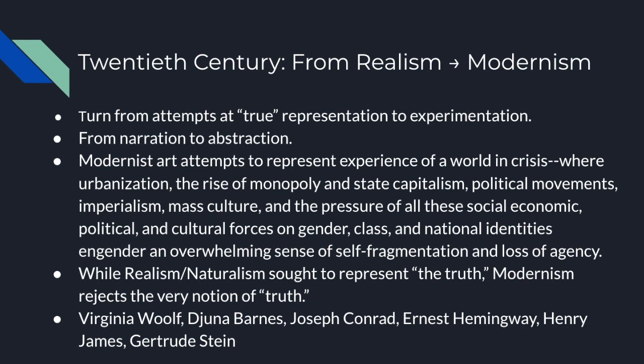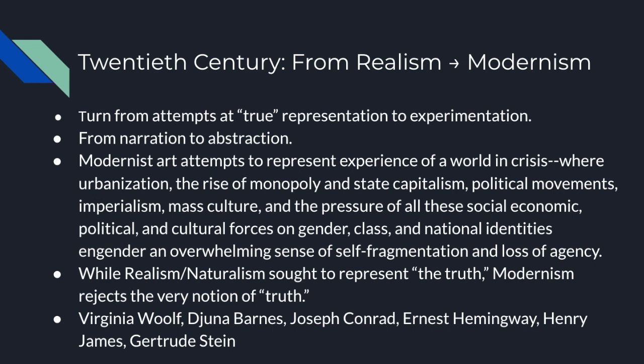Modernist art and literature attempts to represent the experience of a world in crisis. During this period, we see urbanization, the rise of monopoly and state capitalism, political movements, imperialism, mass culture, and just all of these things and how they influenced individual people. Most of these artists and authors would suggest that all of these forces gave way to an overwhelming sense of self-fragmentation and a loss of individual agency. While realism sought to represent the truth, modernism rejects the very notion of truth.